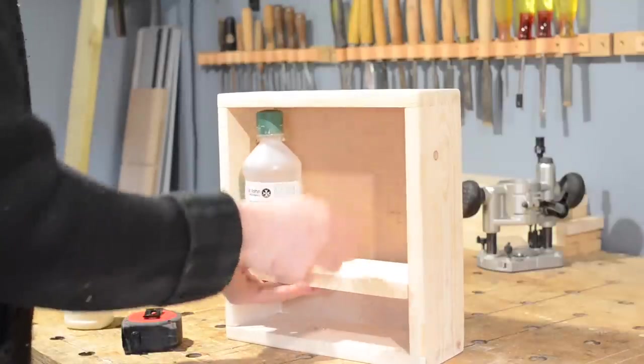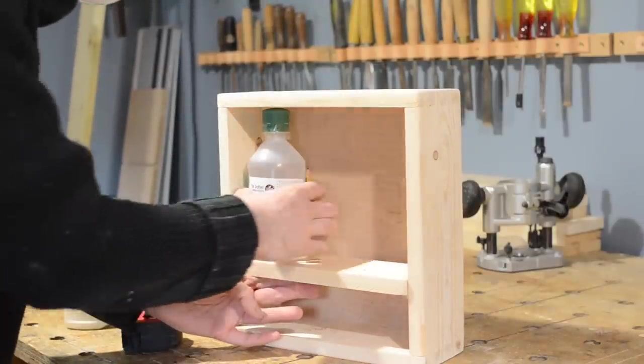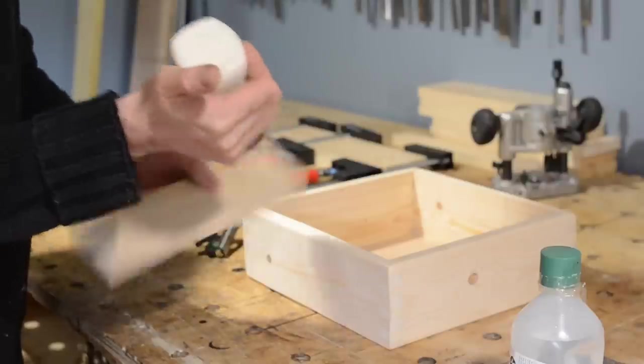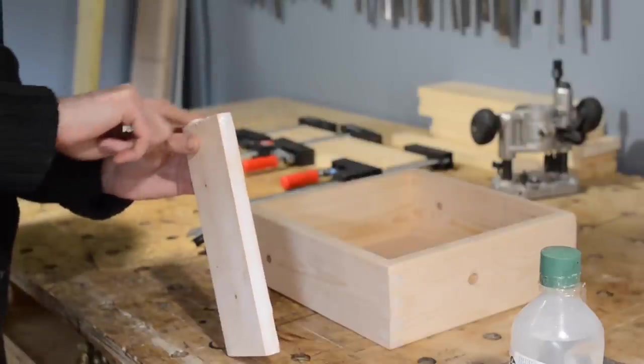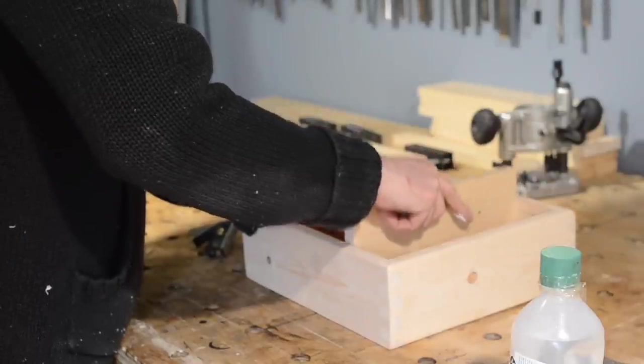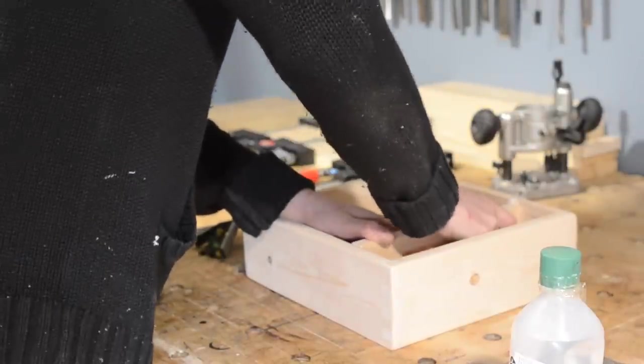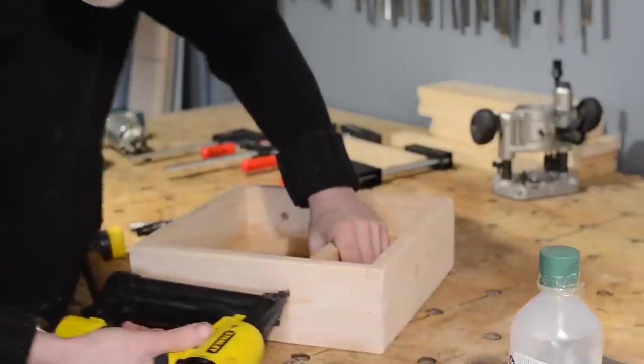The eyewash bottle's the biggest thing that needs to go in there, so I'll use that to determine the height of the first shelf. Get it marked, get some glue on, then I can get it put in place and fire some brad nails into it from the outside. I'm not worried about the brad nails leaving marks on the outside because I'm going to come back later and fill and paint this whole cabinet.